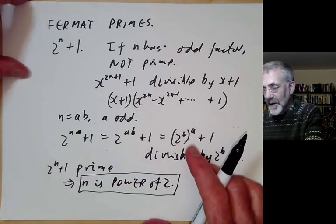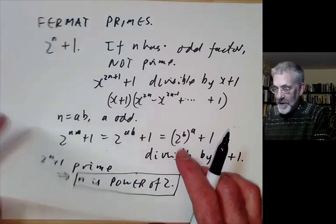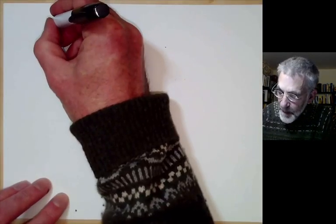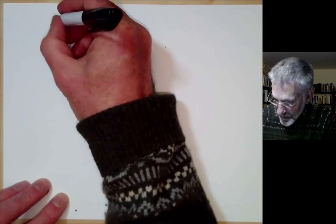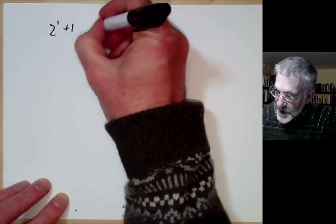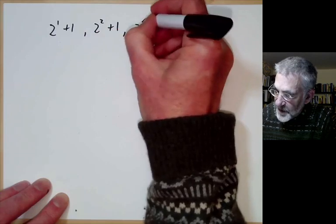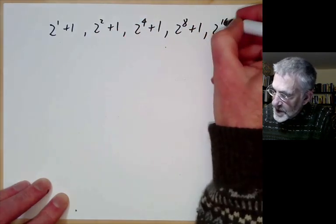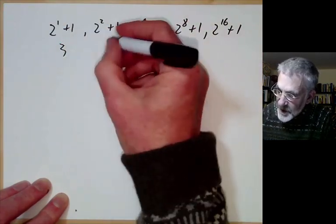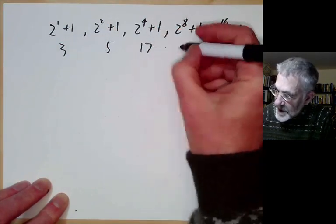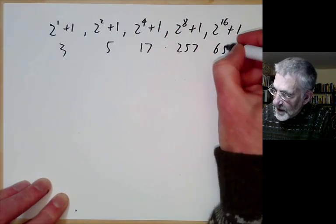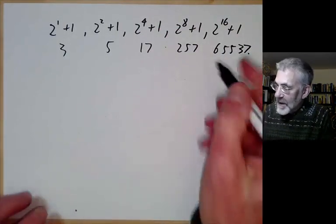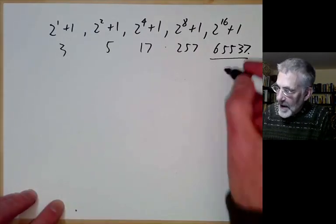Fermat showed this is prime for 2^1+1, 2^2+1, 2^4+1, 2^8+1, and 2^16+1, which are 3, 5, 17, 257, and 65537. And what we're going to do is try to check these are prime by hand.